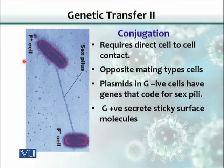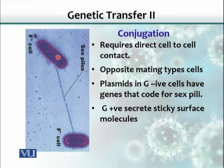F basically stands for the fertility plasmid that was studied for the first time. Scientists noticed that cells with this F-plus plasmid can synthesize sex pilus, which contacts another cell that does not have the fertility or F plasmid factor. F-positive cells can then transfer their plasmid from the donor bacterium to a recipient, which is an F-negative cell.